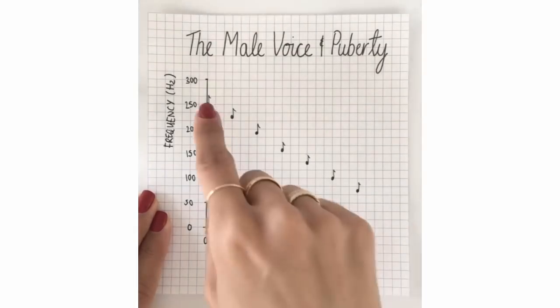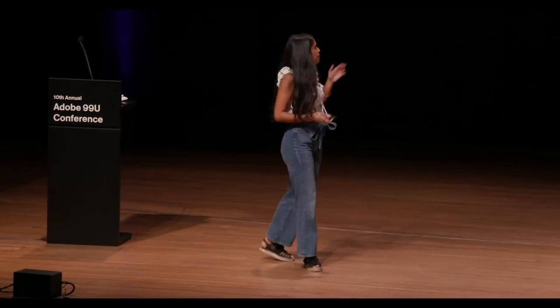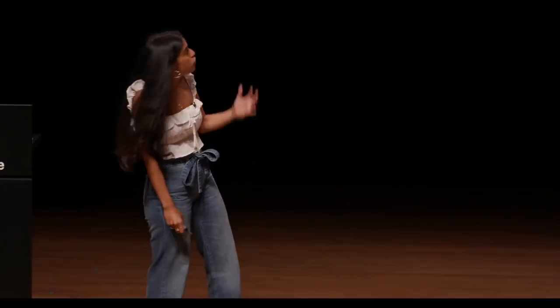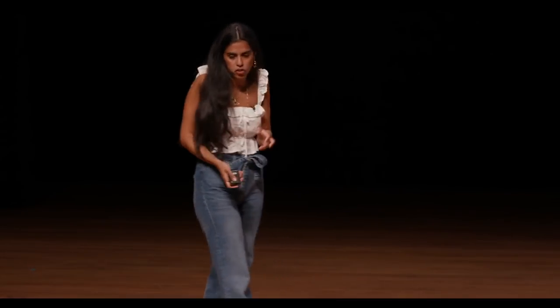Another way that you can introduce sequencing is by breaking down different historical periods — completely different example here. And you can also sequence by showing one chunk of the information at a time. It doesn't necessarily need to be historical chunks — it can still be different chunks.